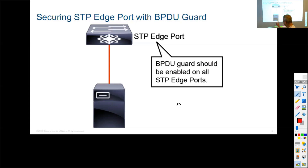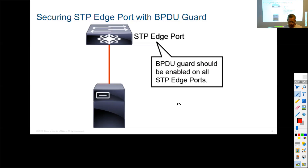If a bad actor tries to become the root bridge, all traffic in your core would route through them, allowing them to examine everything and attack specific applications on specific VLANs. We don't want this to happen. We must identify and enable features like BPDU Guard to protect the switch environment. This is just one of many spanning tree security features available.